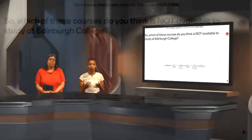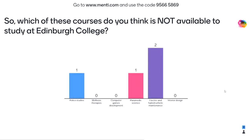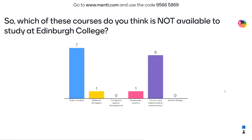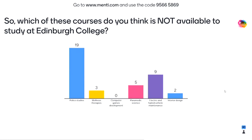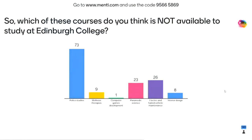Edinburgh College offers a huge range of courses over four broad faculties — that basically means four academic departments. We have Creative Industries, Engineering and Built Environment, Health, Wellbeing and Social Sciences, and Tourism, Hospitality and Business. So with that in mind, which of these following courses do you think is NOT available to study at Edinburgh College — police studies, wellness therapies, computer game development, paramedic science, electric and hybrid vehicle maintenance, interior design, wine and spirit studies, or radio and podcasting?